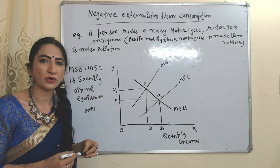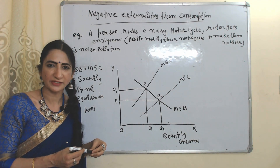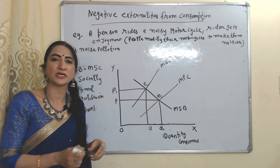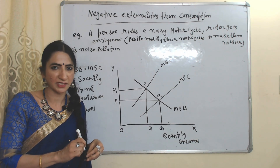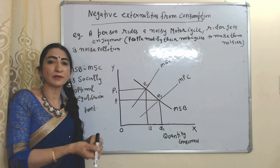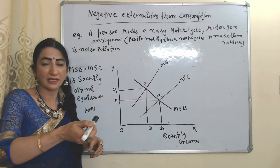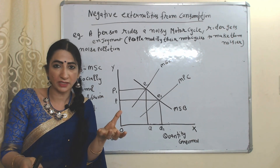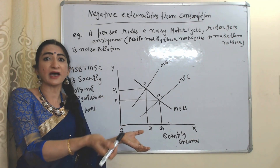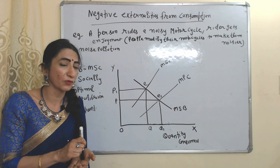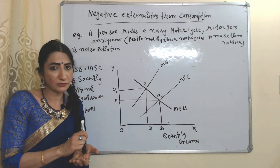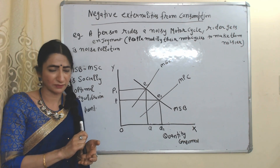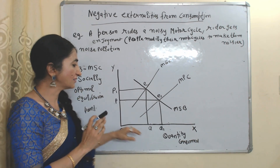Now we are going to talk about negative externalities from consumption. When consumption becomes a cause of environmental pollution, it is called negative externality from consumption. For example, people ride noisy motorcycles — some people modify their motorcycle to make it more noisy. Obviously they are enjoying, but this causes noise pollution, and noise pollution is a cost for society, so it will be called negative externality from consumption.